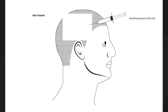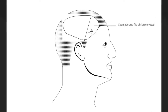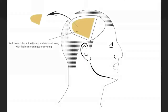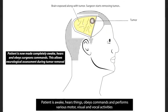Let me explain exactly what happens during awake craniotomy. Hair is shaved and the incision site is infiltrated with local anesthesia. The skin flap is elevated and reflected, exposing the underlying bone. The bone is then removed and the underlying brain with its coverings are exposed.